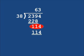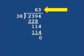114 minus 114 equals 0. There's nothing left to pull down. I am done. And the answer to what is 2,394 divided by 38 is 63.